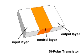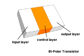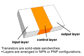The layers are either N-type material, which conducts negative charges, or P-type material, which conducts positive charges. The layers are arranged like a sandwich in an NPN or PNP configuration.